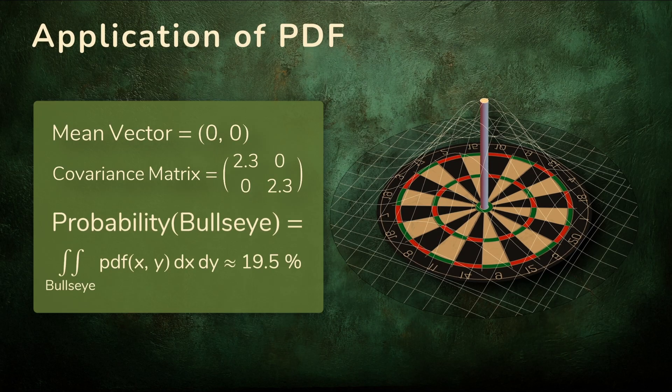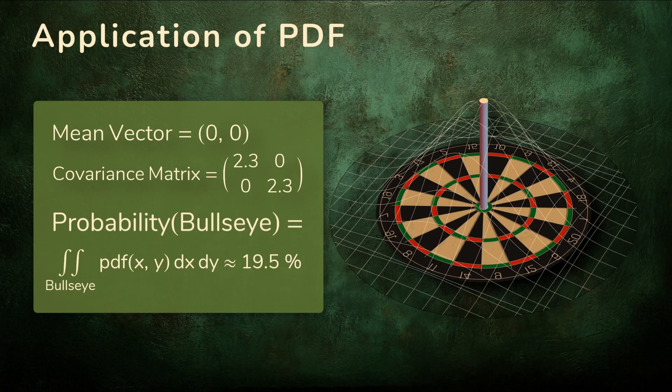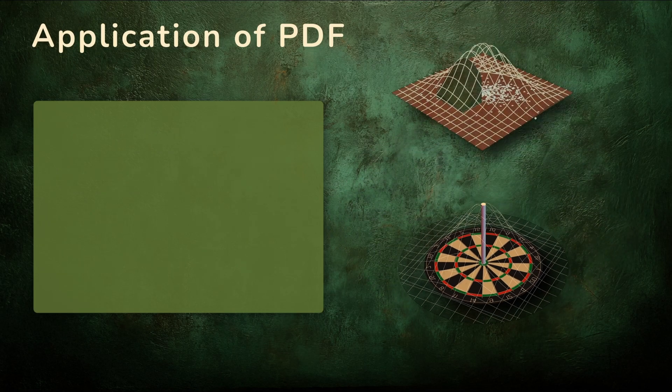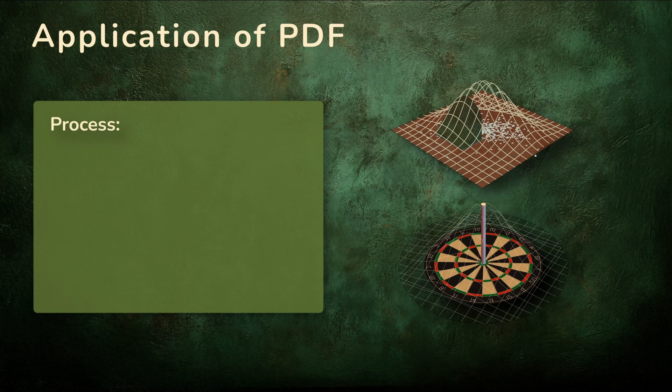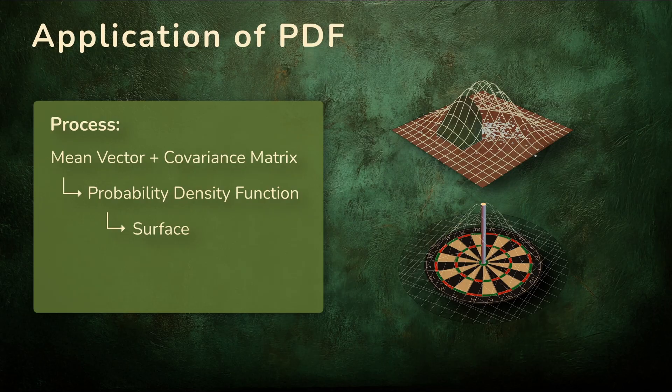Then, just as before, we integrate the PDF, this time over the circular region. That volume under the surface gives the probability of a dart hitting the center target. In both examples, the process is the same. Mean vector and covariance matrix define the PDF. The PDF defines the surface, and probabilities come from integrating over the region you care about.